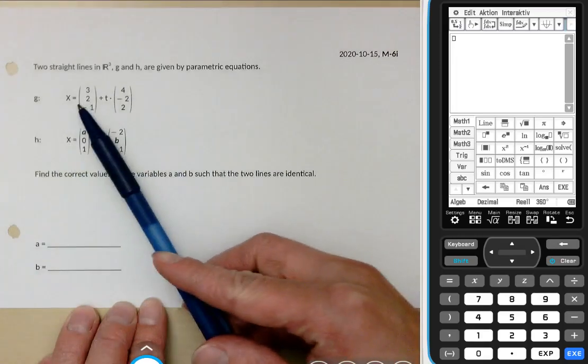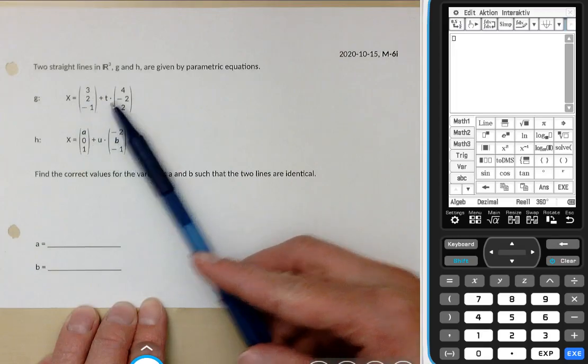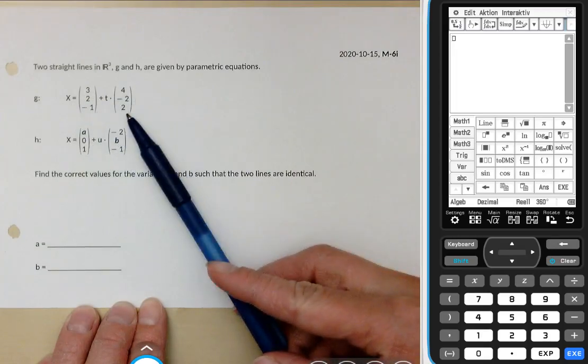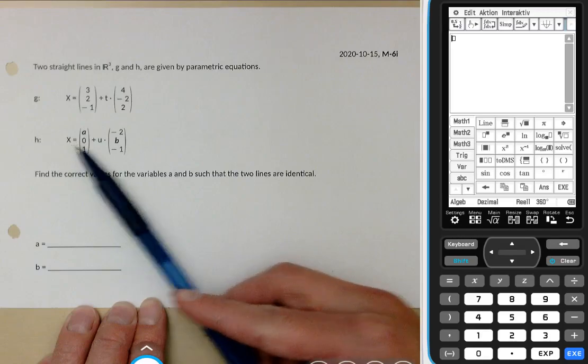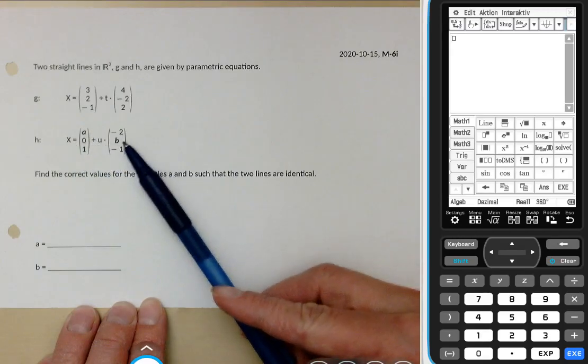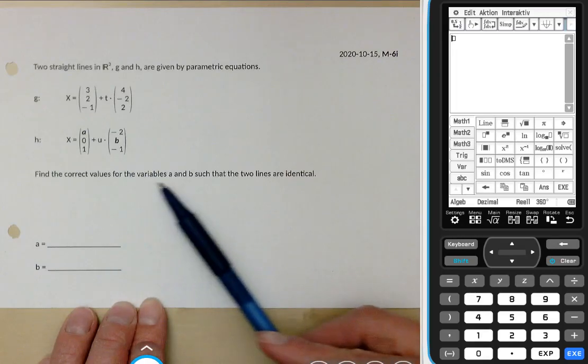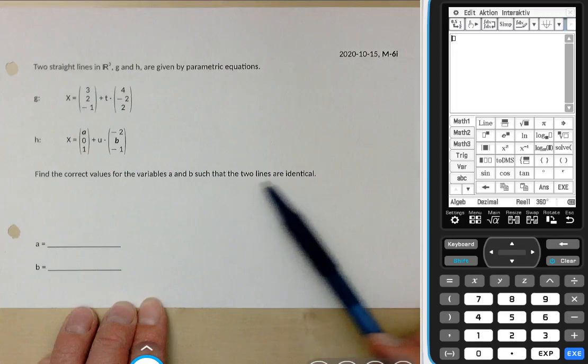The first one is given by x equals (3, 2, -1) plus t times (4, -2, 2). The second one x equals (a, 0, 1) plus u times (-2, b, -1). You're required to find the correct values for a and b such that the two lines are identical.